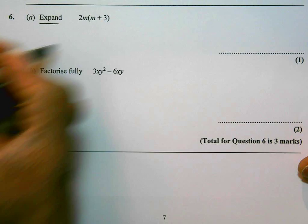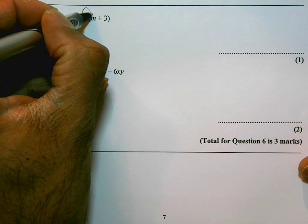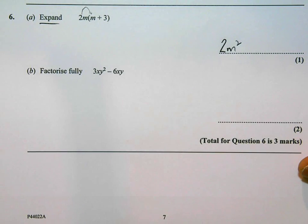Expand means to multiply out. So I'm going to times everything inside the brackets by 2m. 2m times m is going to be 2m squared. That's something you should know and you should feel pretty comfortable with.